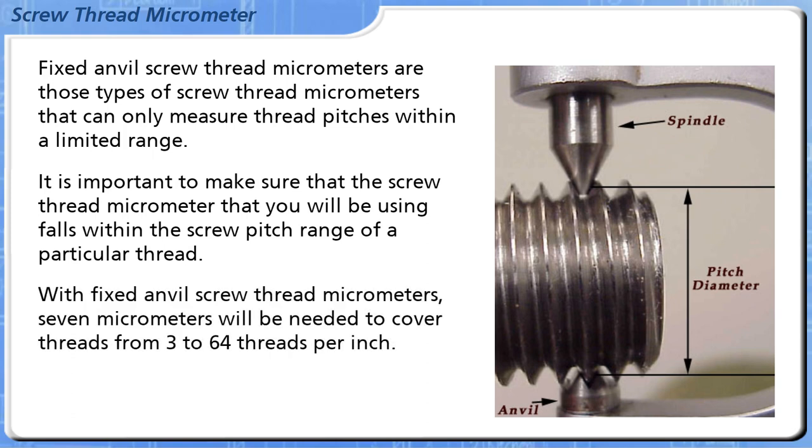With Fixed Anvil Screw Thread Micrometers, 7 micrometers will be needed to cover threads from 3 to 64 threads per inch.